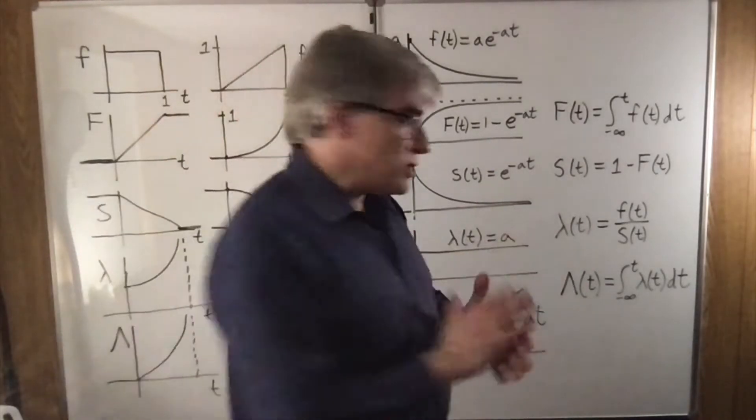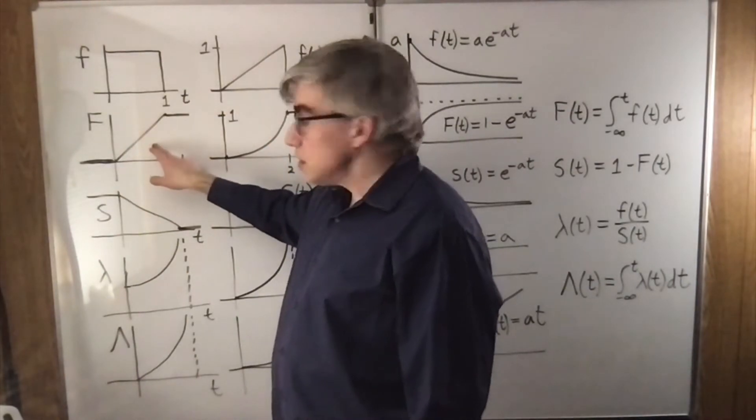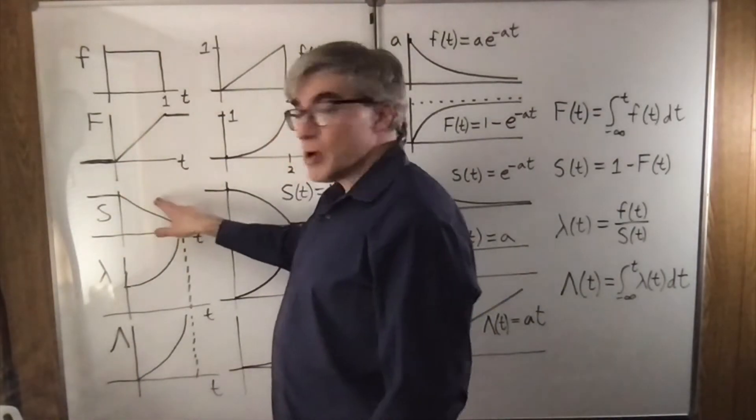So what do these look like? The uniform density, big F, is linear. It's just T. The survival function is 1 minus T.